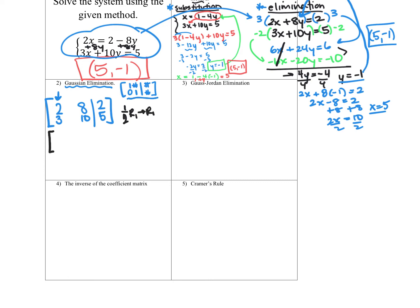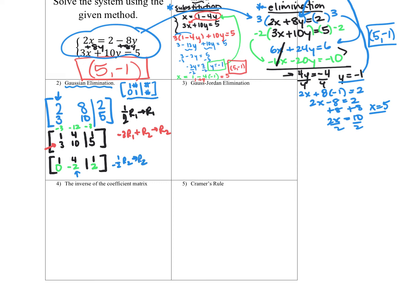Make sure you're writing those row operations. The matrix becomes 1, 4, 1 and 3, 10, 5. My next goal is to make the 3 become a 0, which happens by adding negative 3 times row 1 to row 2 to make my new row 2. Row 1 stays 1, 4, 1. Taking negative 3 times row 1 gives negative 3, negative 12, negative 3. Adding that to row 2 gives 0, negative 2, and positive 2. Then take half of row 2 to make the negative 2 a 1, giving a new row 2 of 0, 1, negative 1.